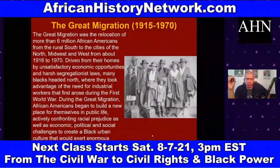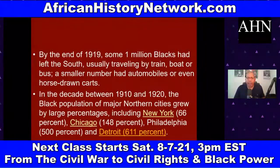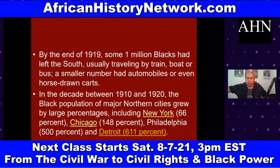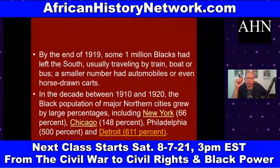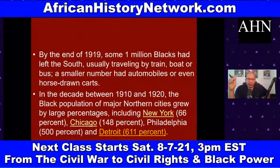Driven from their homes by unsatisfactory economic opportunities and harsh segregationist laws, many African Americans headed North, where they took advantage of the need for industrial workers that first rose during World War One, 1914 to 1918. Then 1919 became the Red Summer — over 25 major race riots in this country. White men came back home, couldn't find jobs, saw positions being filled by African Americans and immigrants, and it exploded. By the end of 1919, about one million African Americans had left the South, traveling by train, boat, or bus.